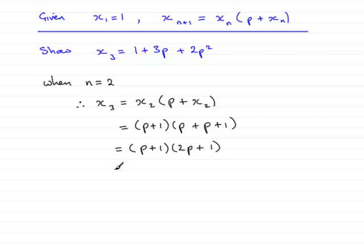Expand the brackets now and we have p times 2p is 2p squared, p times the 1 here is plus p, 1 times 2p is 2p, and 1 times 1 is 1.